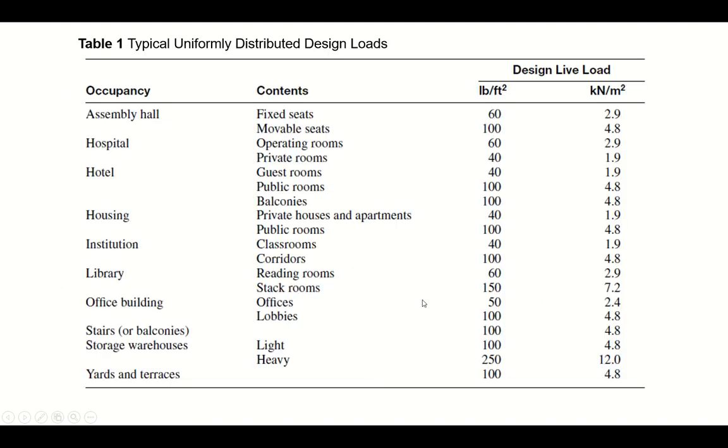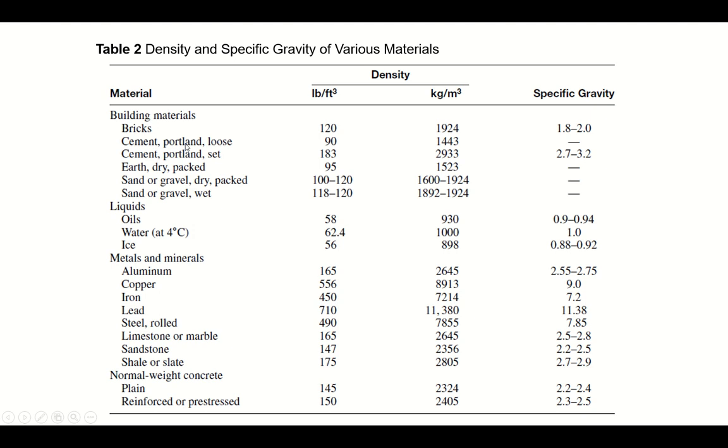This is your Table 1 which gives you the type of occupancy, for example assembly hall, hospital, hotel, housing, institution, library, office building, and the contents. For example, if you are sitting in the library and you are in the reading room, then the live load will be 60 psf, pound per square feet. And if you are in the stack room, the live load will be 150 psf. So it varies with the contents and with the occupancy as well.